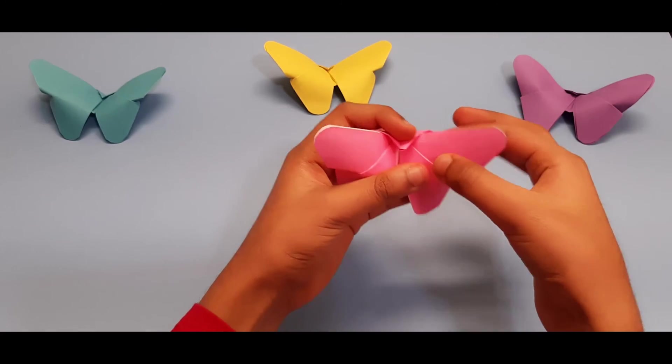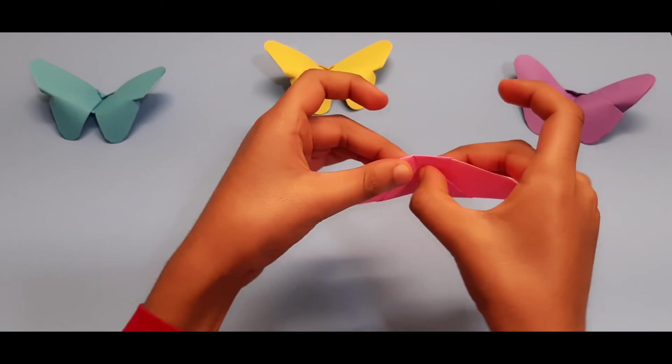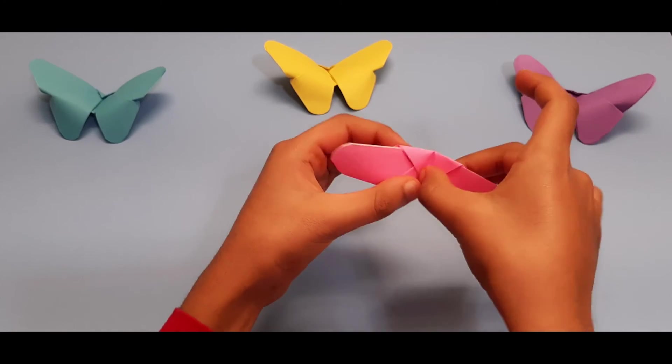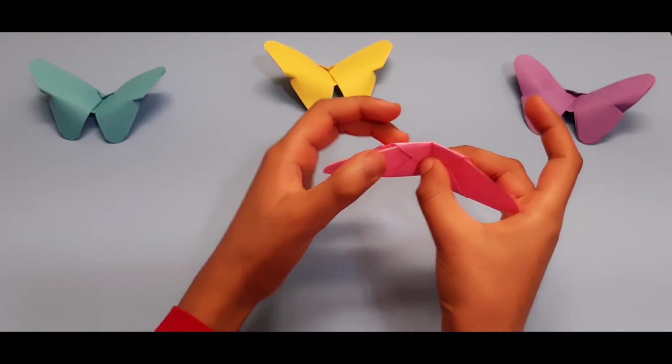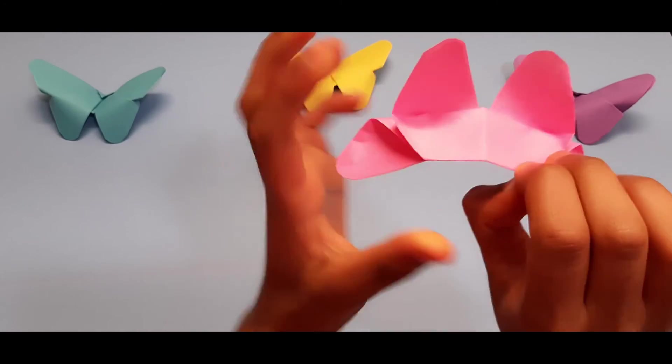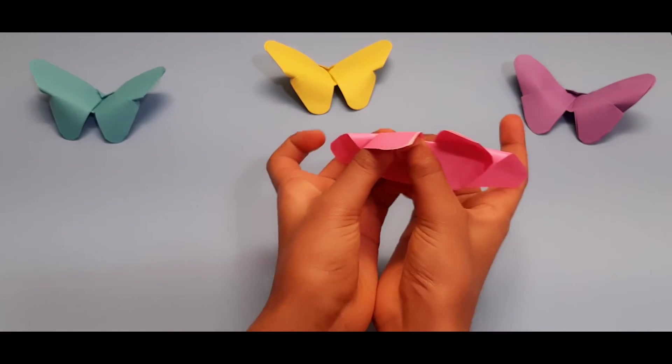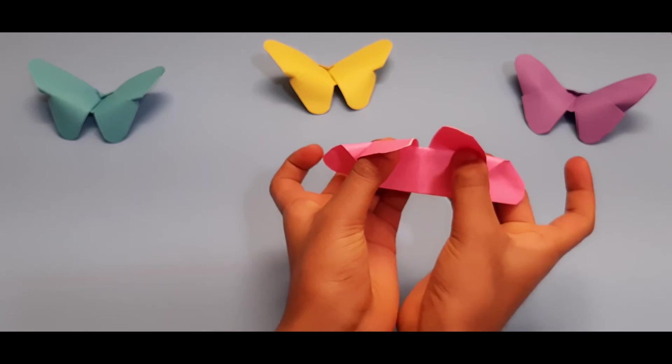Turn to the back and give it a few creases over here. The origami butterfly is finished.